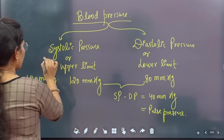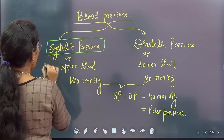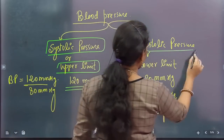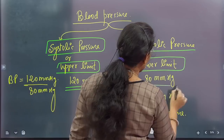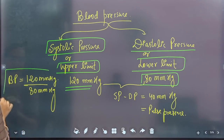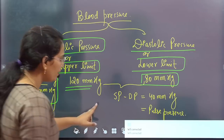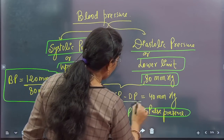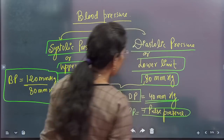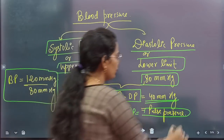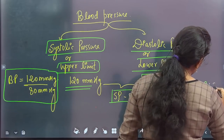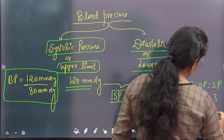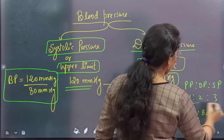Next we look at blood pressure. Systolic pressure is the upper limit — 120 mmHg. Diastolic pressure is the lower limit — 80 mmHg. So our normal blood pressure should be 120/80. Sometimes pulse pressure (PP) is asked: PP = systolic pressure minus diastolic pressure = 120 − 80 = 40 mmHg. The ratio of pulse pressure : diastolic pressure : systolic pressure is 1:2:3, since 40:80:120 = 1:2:3.